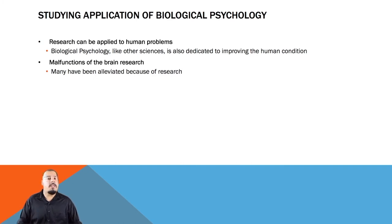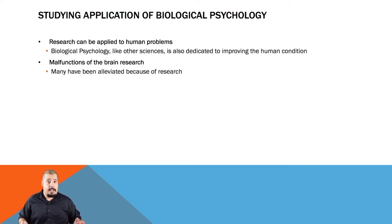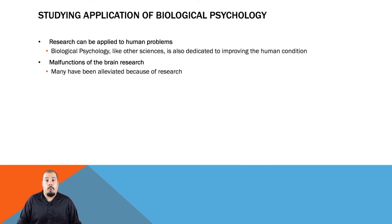Because of behavioral neuroscience, many abnormalities of behavior as well as malfunctions of the brain have been alleviated or at least made treatable. Applied research relates the findings of biological psychology to areas of concern to human society, such as the treatment of diseases, social issues, and issues of economic importance.